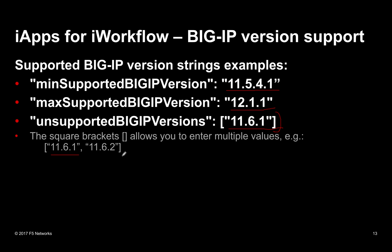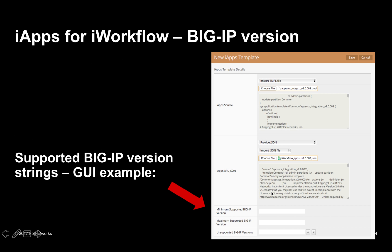You'll notice the square brackets because you can put multiple entries in — it's an array. Here's what it looks like in the GUI: you can see the version number inside the iApp, and there's a version number reference. Down here is the supported Big IP version information — minimum, which could be 11.5.4, and maximum, perhaps 12.1.1. There's also a list of unsupported versions. These Big IP version fields are optional — you can leave them empty and still save. What is not optional is the iApp version itself. Even if you call them all v1.0.0, you do have to put the version in there.